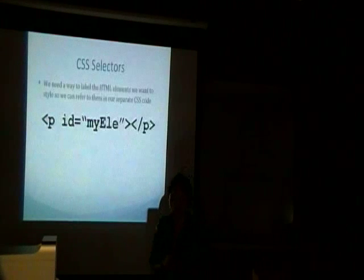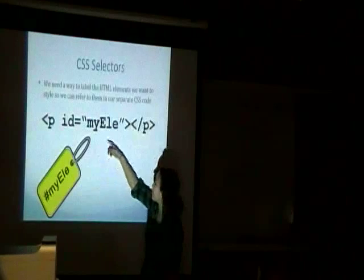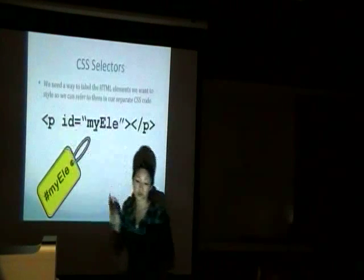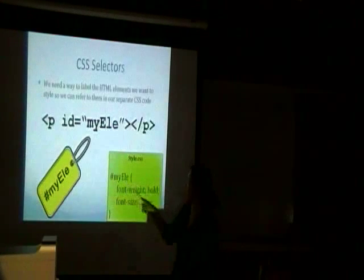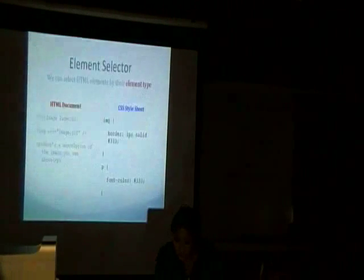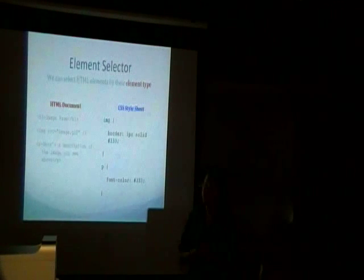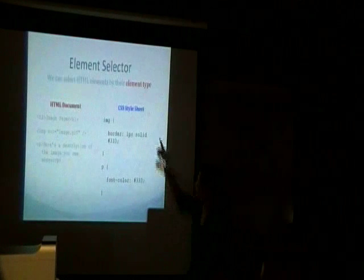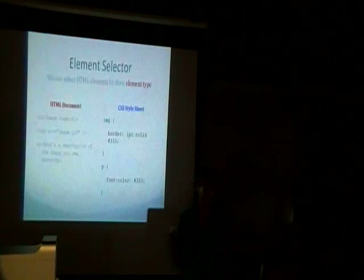We're going to teach you three different kinds. You tag an element with either an ID or a class, or use the element tag. The most basic kind of selector is an element selector — this selects HTML elements by their element type, like image, A for links, div, paragraph, or headings like H1.